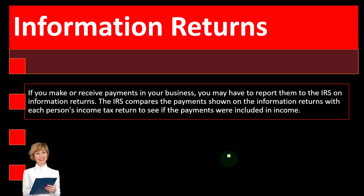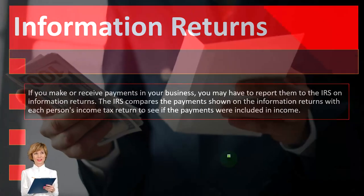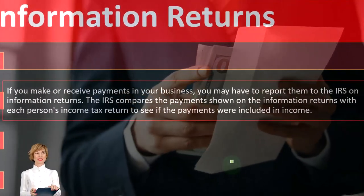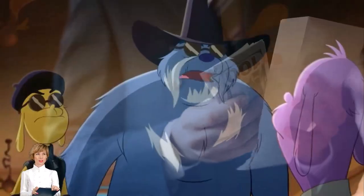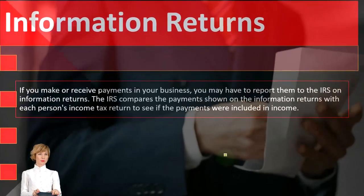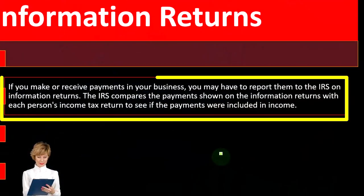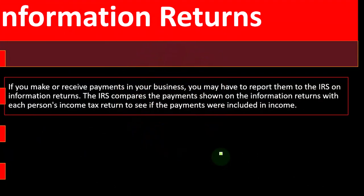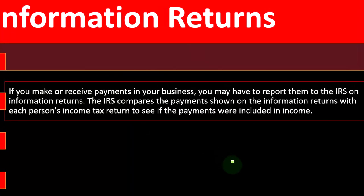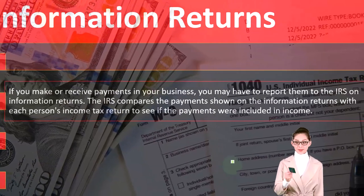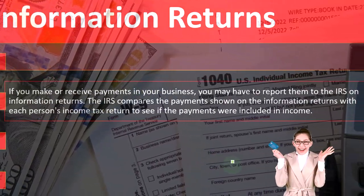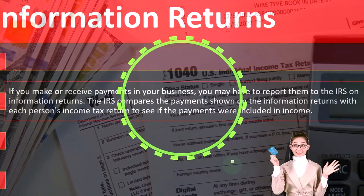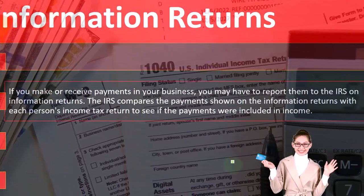Information returns — what are they and how do we deal with them? If you make or receive payments in your business, you may have to report them to the IRS on information returns. To understand them, let's take a step back and think about the tax system. We have an income tax system, so income is bad for taxes. Income is good in general, but if we have to report it, it's going to increase our tax bill. The IRS has an incentive to verify the income we are reporting to make sure we're paying the proper amount of taxes.